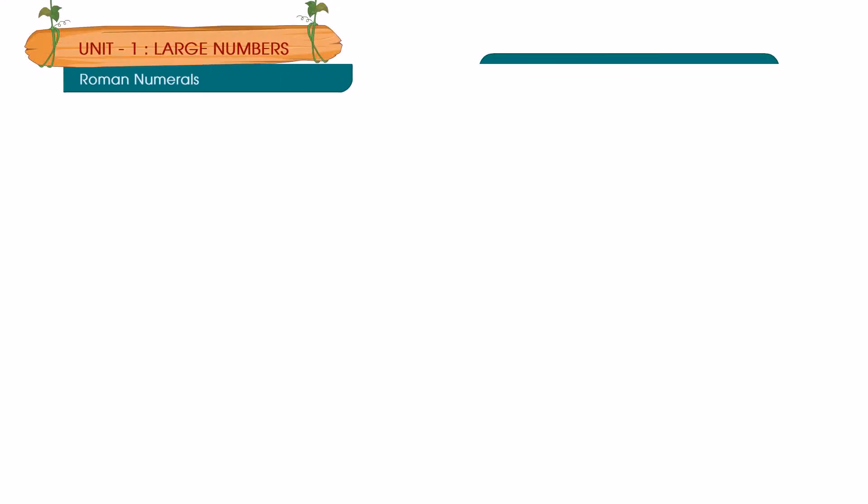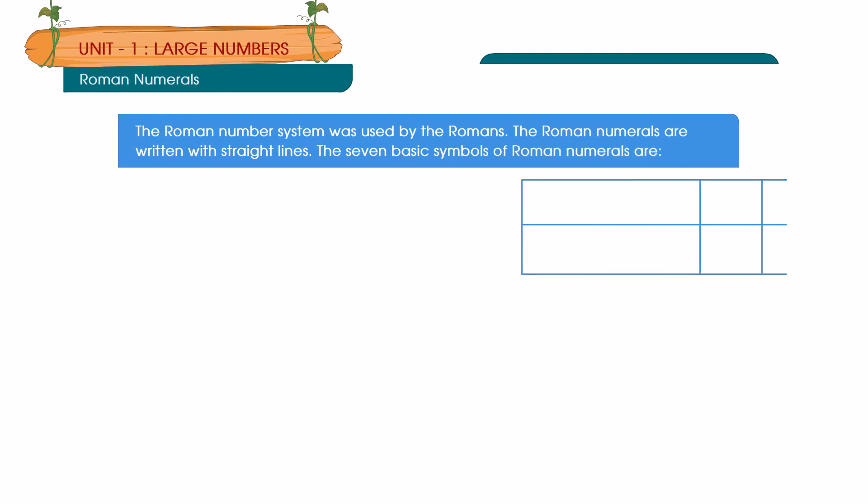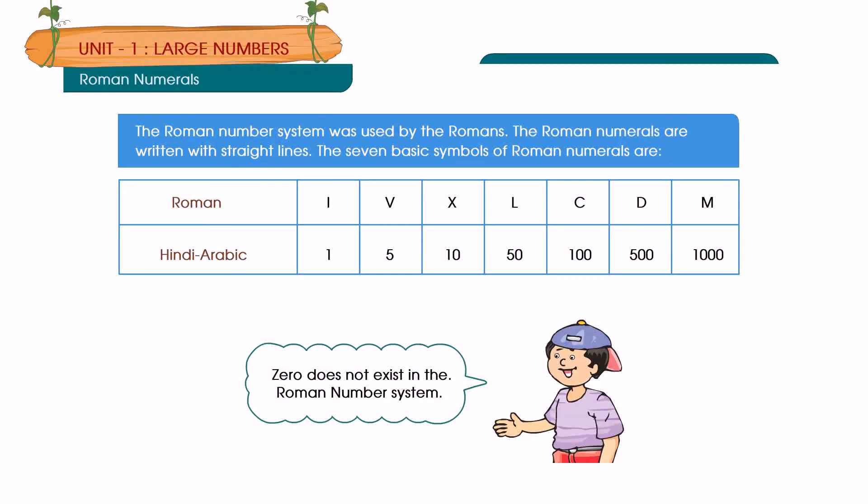Roman Numerals: The Roman number system was used by the Romans. The Roman numerals are written with straight lines. The seven basic symbols of Roman numerals are: I, V, X, L, C, D, M representing 1, 5, 10, 50, 100, 500, 1000. Zero does not exist in the Roman number system.